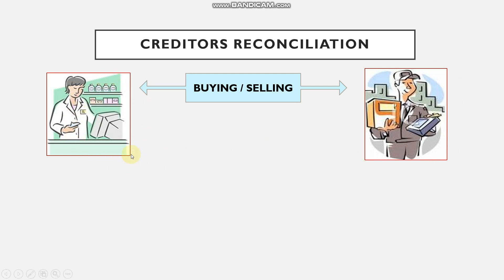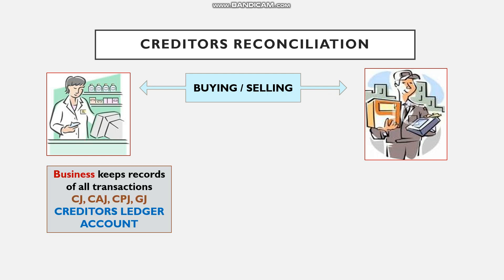The business buys goods on credit, so they have a relationship with the supplier who has granted them credit — having done a credit check and negotiated credit terms. There are many related activities to buying and selling. From the business's point of view, the main journals are: the creditors journal (CJ) for goods bought on credit, the creditors allowances journal for goods returned or allowances received for damaged goods.